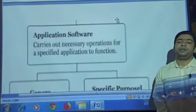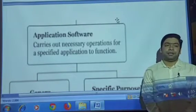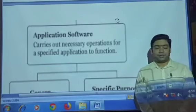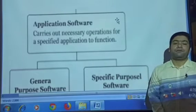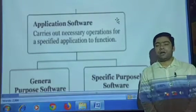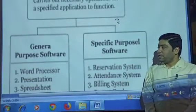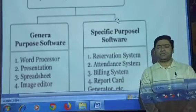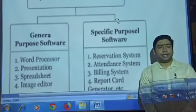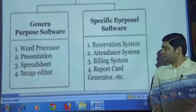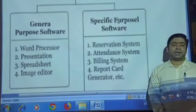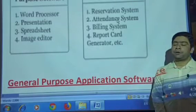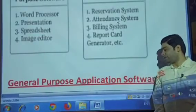As we already discussed about system software, now in this part we are discussing about application software. Application software means the software used for a specified application — when we want to do different tasks with the help of a computer. Application software has two partitions: first is general purpose software, and second is specific purpose software.